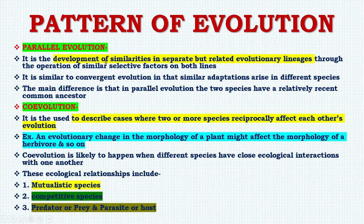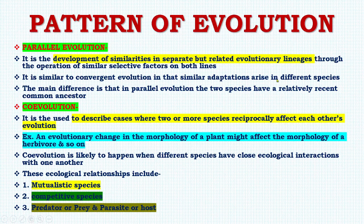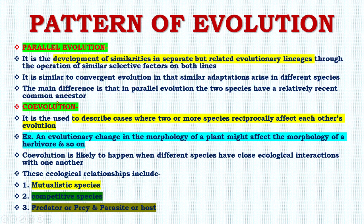The next pattern is parallel evolution. It is the development of similarities in separate but related evolutionary lineages through the operation of similar selective factors on both lines. It is similar to convergent evolution in that similar adaptations arise in different species. The main difference is that in parallel evolution, the two species have a relatively recent common ancestor.